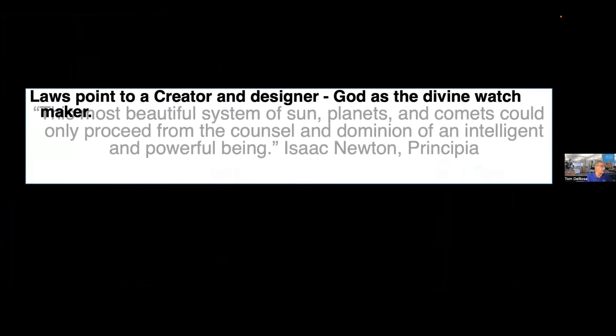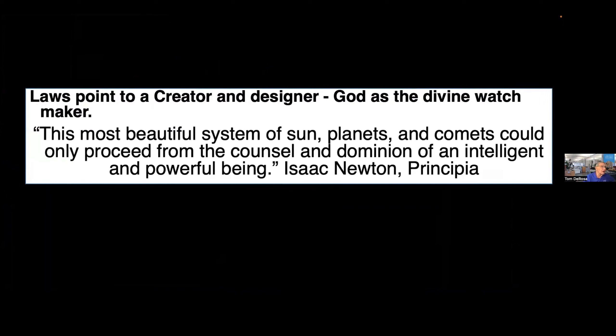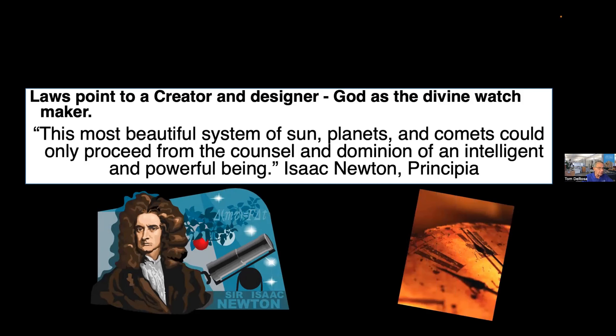So we look at the laws to a creator, designer, God, as the divine watchmaker. This most beautiful, this is Isaac Newton speaking, and he wrote this in the Principia. The most beautiful system of sun, planets, and comets could only proceed from the counsel and dominion of an intelligent and powerful being. That's Sir Isaac Newton talking about the only way I could look at the universe is that there's got to be a law and a lawgiver, because there's design here. The watchmaker is what he's been referred to, Isaac Newton. Like a watch is working and has a design and has a designer.